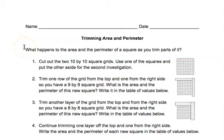What happens to the area and the perimeter of a square as you trim parts of it? Well that's what we're going to be investigating today. Your first step is to cut out two 10 by 10 square grids. Use one of the squares and put aside the other for the second investigation.